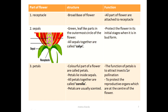The function of petals is to attract insects for pollination. Pollination is the transfer of pollen grains from the anther to the stigma. Petals also protect the reproductive organs — the anther, stigma, and ovary — which are at the center of the flower.